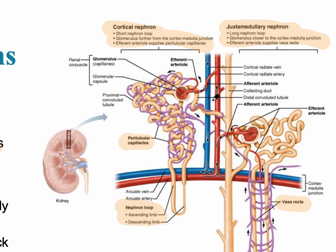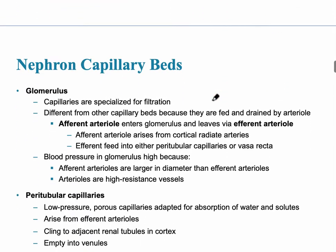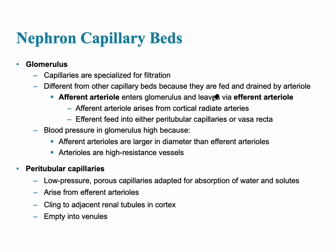The blood vessels throughout the nephron — specifically the capillaries — function in reabsorption and secretion, moving molecules back and forth between the nephron and the blood vessels. The first capillary bed is the high pressure glomerulus, specialized for filtration, where water is forcibly moved out of the capillary blood vessels and into the renal tubule. It is fed by an afferent arteriole and drained by an efferent arteriole, which is unique in the body.